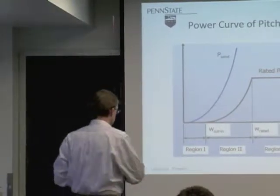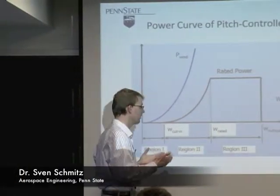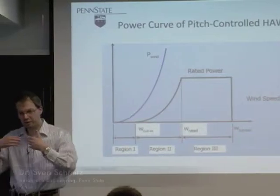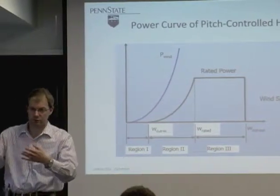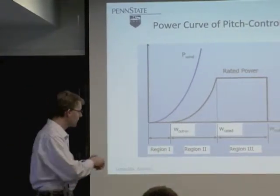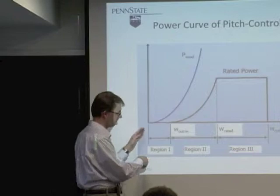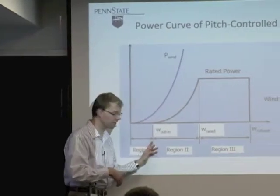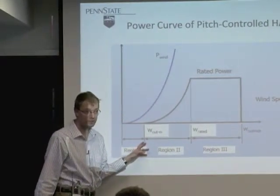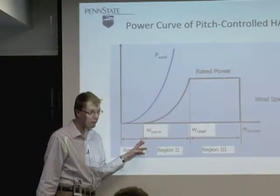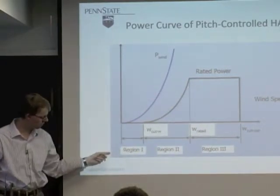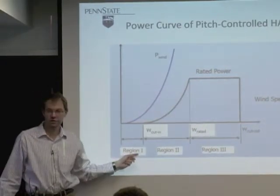A real wind turbine, if you look at it, is going to take a bit of wind speed to start it. There is a region from zero wind up to a certain wind speed called the cut-in wind speed where there's no power produced by the wind turbine — also called Region 1.